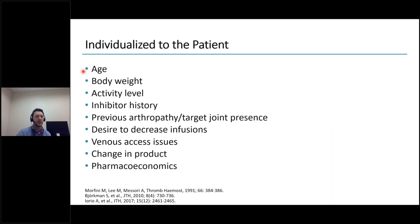So we can individualize the therapy taking into account many variables: the age, the body weight, how active is the patient, if there's a history of inhibitor, if there's arthropathy, what is the desire of the patient to increase or decrease the infusion, have a higher factor level because he's doing high physical activity. And all these aspects can be taken into account using pharmacokinetic assessment.